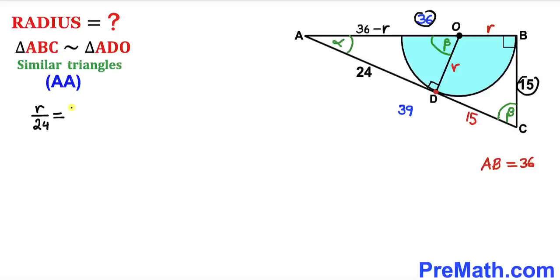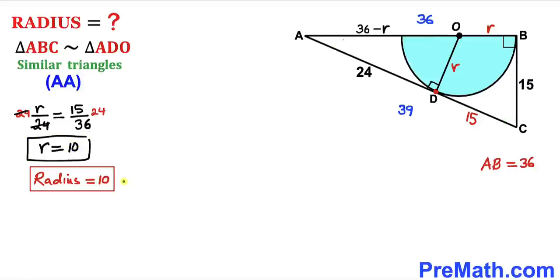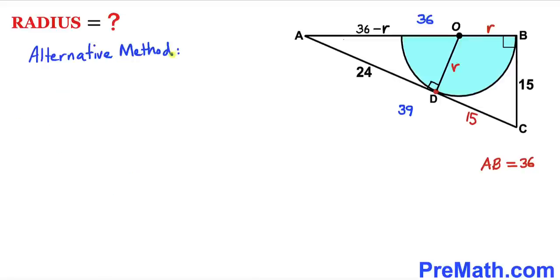Multiplying both sides by 24 to isolate r, simplifying the right-hand side gives us 10. So the radius of this semicircle turns out to be 10 units. Now let me show you the alternative method.